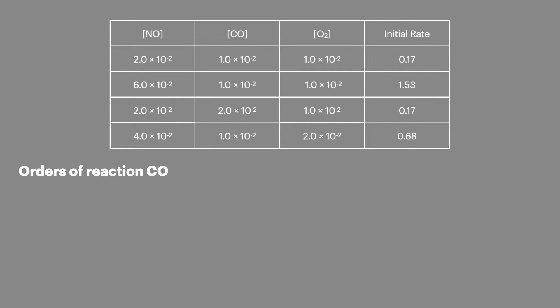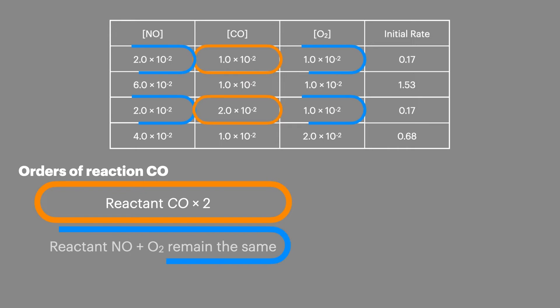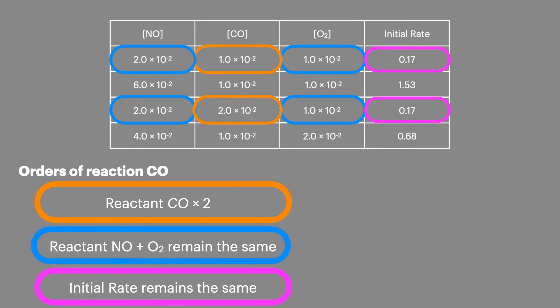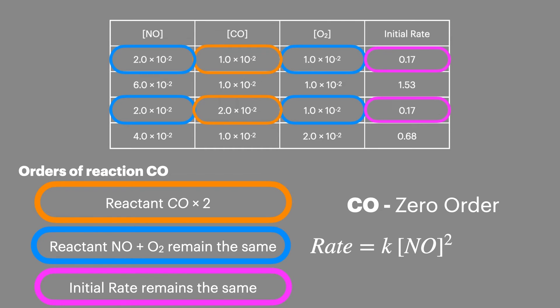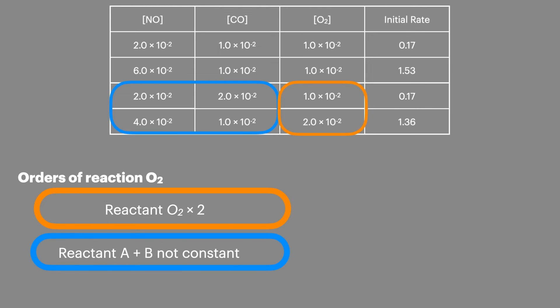Next up we're going to consider the order of reaction for carbon monoxide CO on the initial rate. Using experiments one and three, we can see the concentration of carbon monoxide has gone up two times, and we're lucky here that NO and O₂ remain constant, and we can see that the initial rate has had no change. Because of this we can say that carbon monoxide is zero order, and because it's zero order we don't add it into the rate equation.